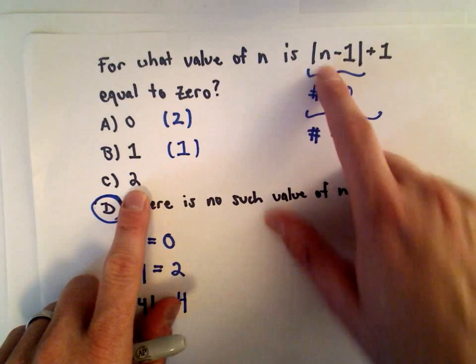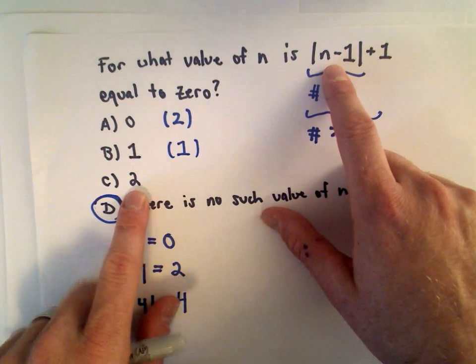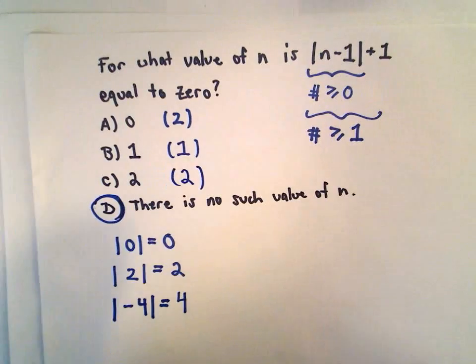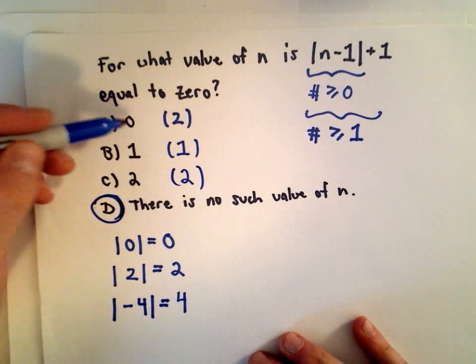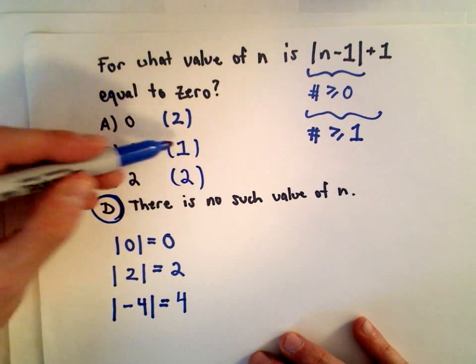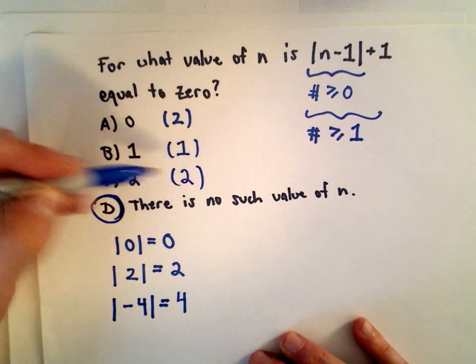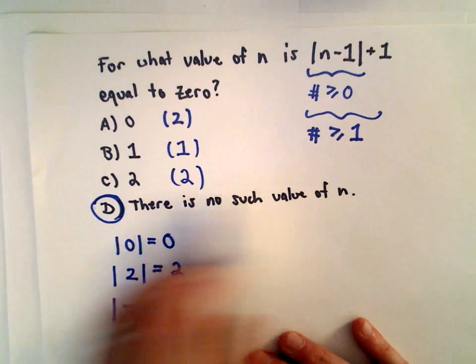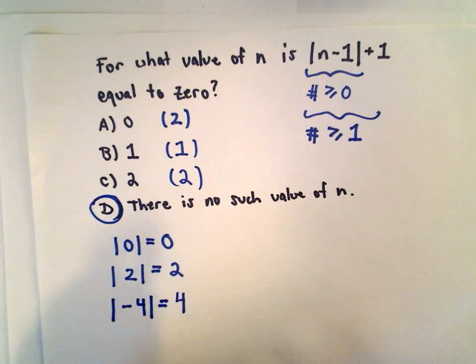And if you substitute in the value of 2, well, 2 minus 1 is 1. The absolute value is still 1. Plus 1, it'll give you the value of 2. So if you substitute in 0, you get 2. If you substitute in 1, you get 1. If you substitute in 2, you get 2. Again, we're trying to get 0 out. So there's no such value of n in this case.